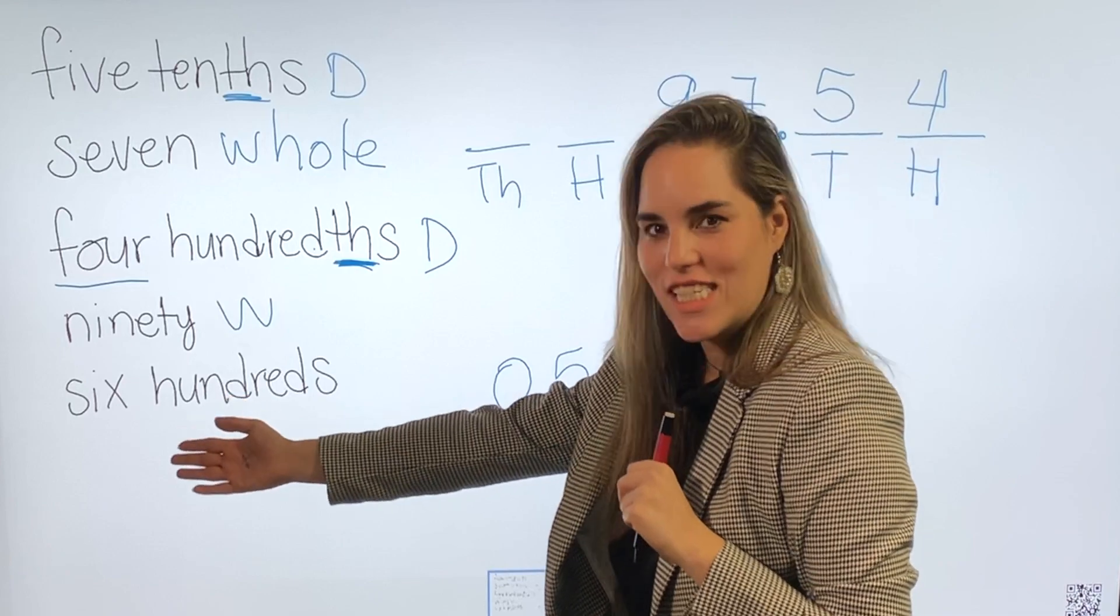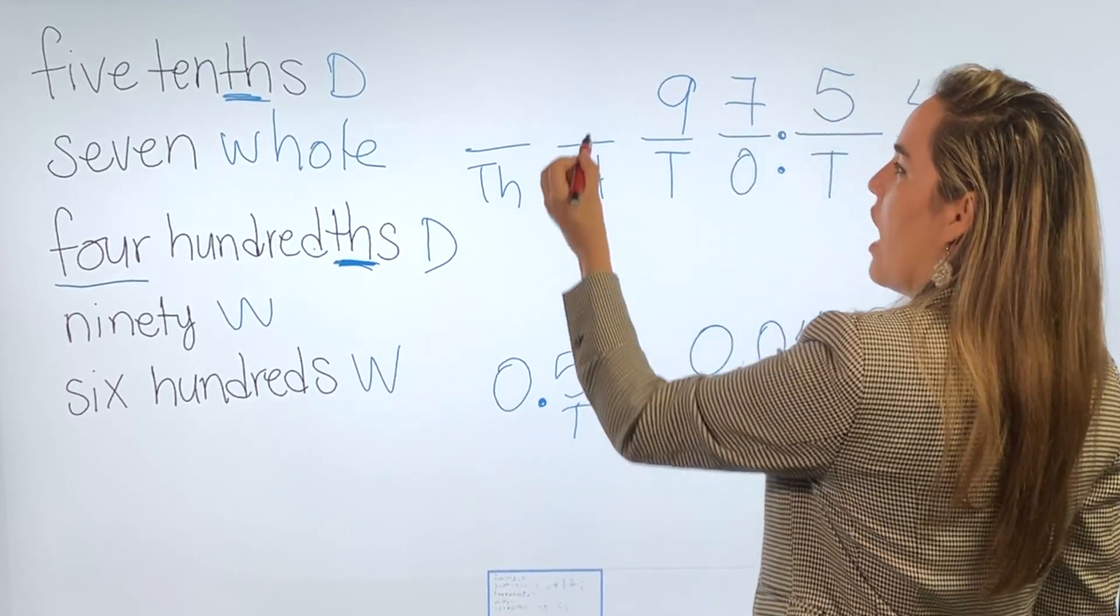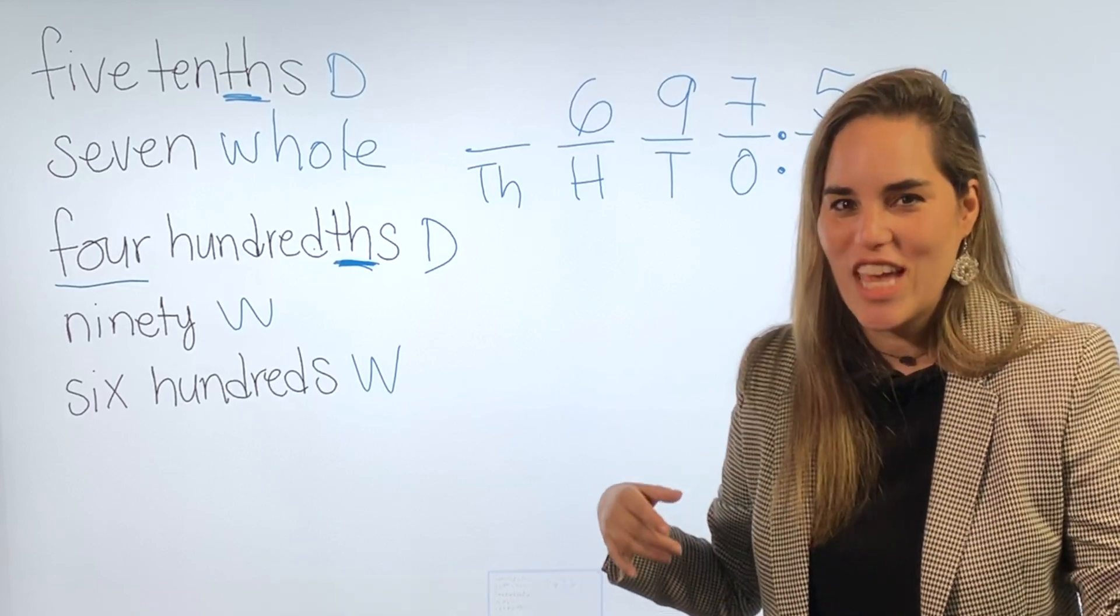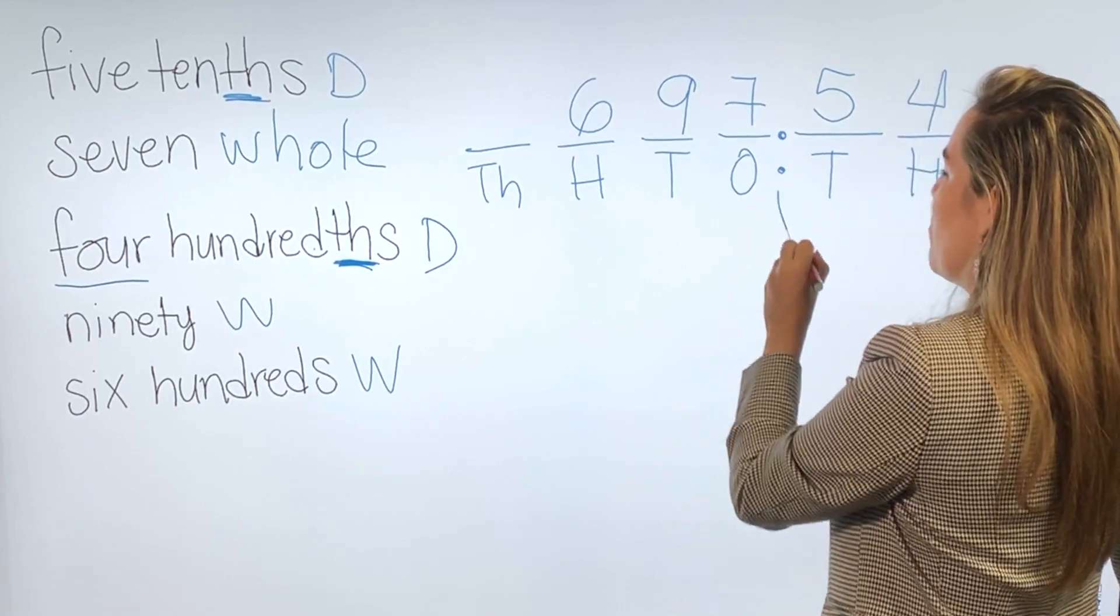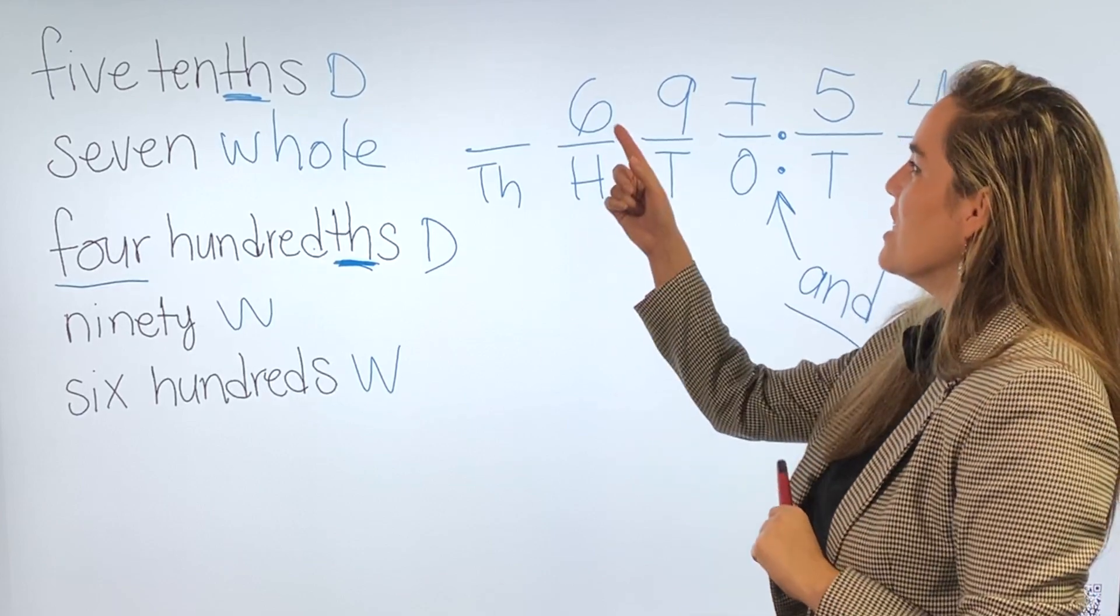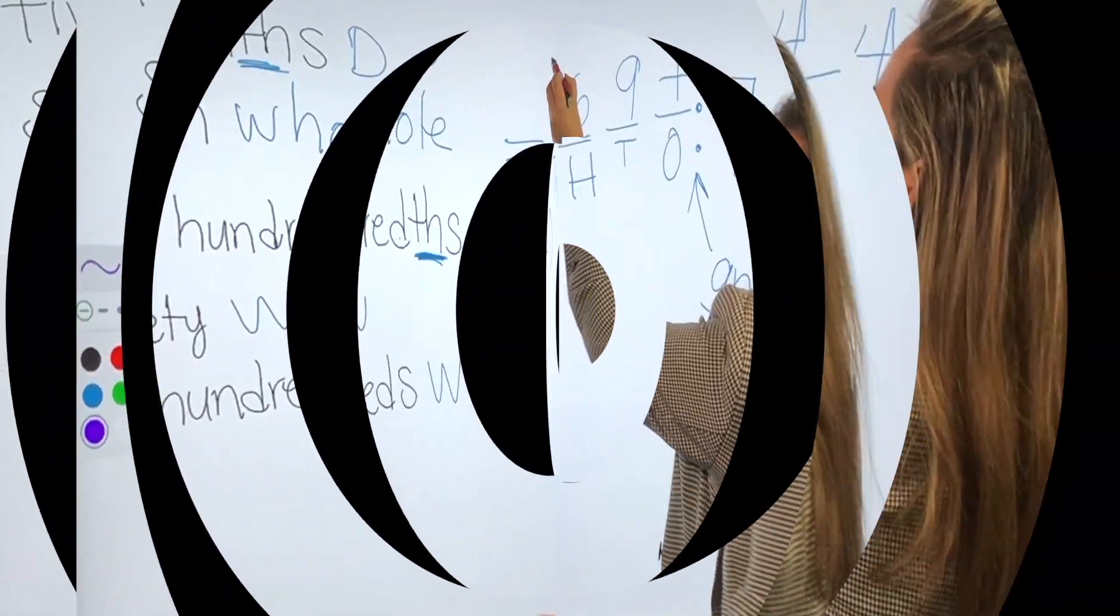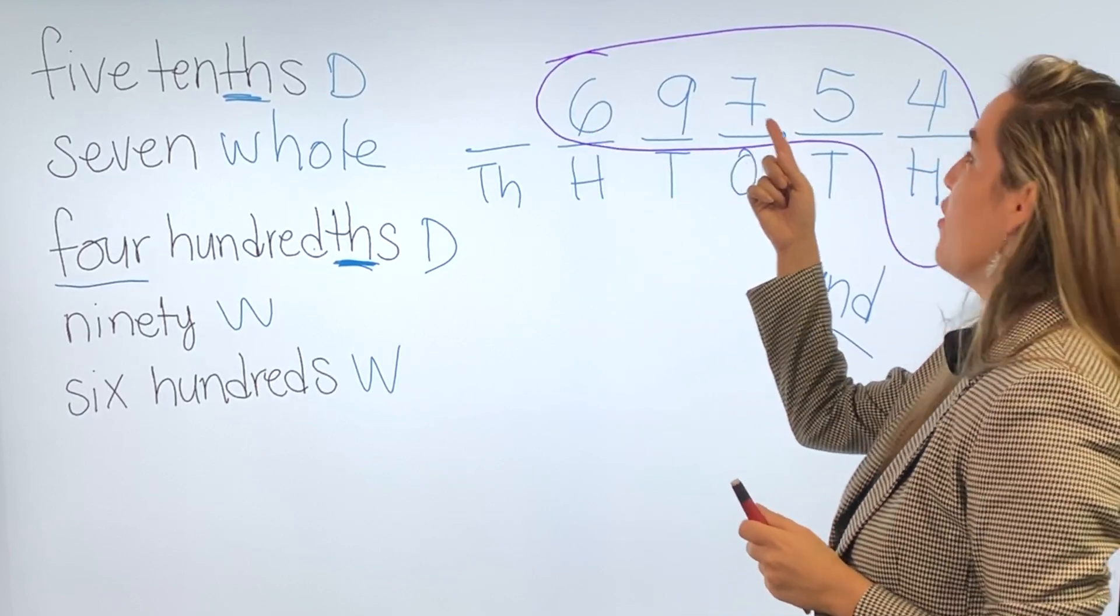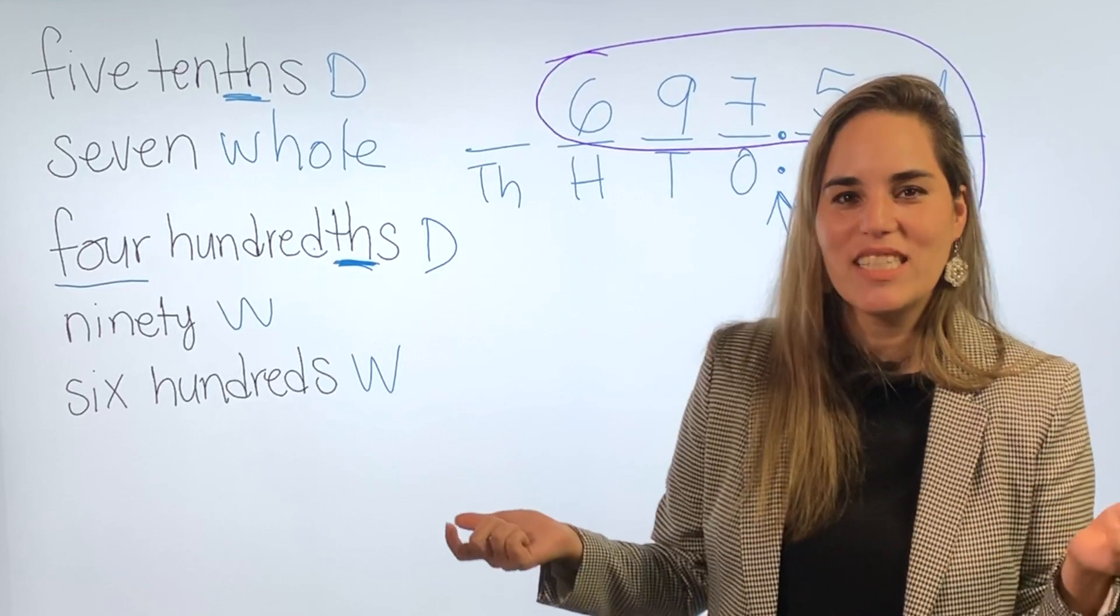And last but not least, we have the six hundreds without the th, which means that this is a whole number. I'm going to place it in the hundreds place. So now I'm going to read the number. The number is 697. And I forgot to tell you something. This decimal point has a name and its name is and. So let's read this number together. 697 and 54 hundredths. Let's read it again. Let's make this easier for you guys. 697 and 54. 54 what? Hundredths. And that's it. As simple as that, we build the decimal number.